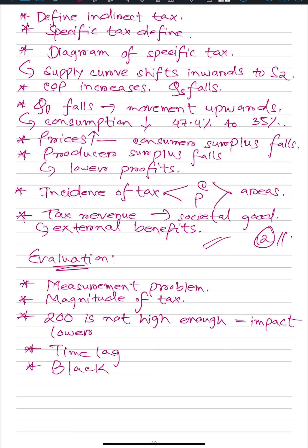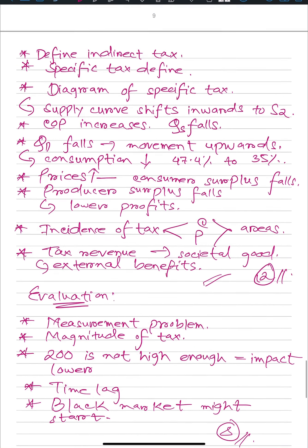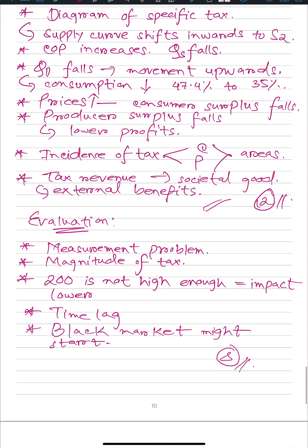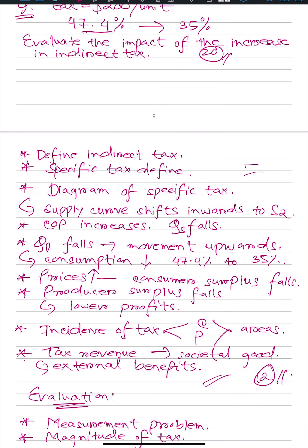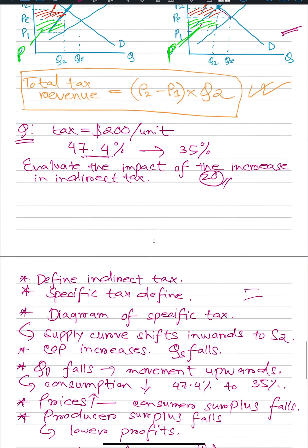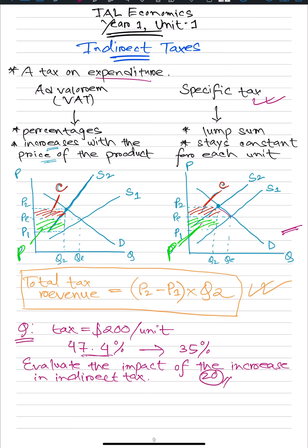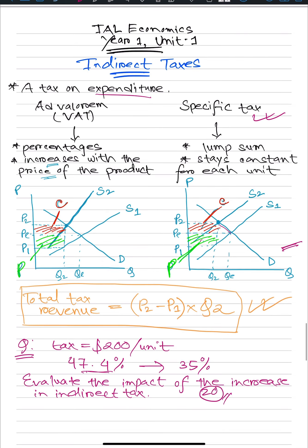The last evaluation point is that there might be a black market. I'm giving a lot of evaluations — you just have to write three or four. If people can't buy mobile data legally, they might find a way to buy it illegally, and then the entire argument of increasing the tax falls. These will get you eight marks. The evaluation points are literally always the same — if you increase tax, all of these are going to happen no matter what. Just try to remember the diagrams and that's basically it. Thank you for watching and we'll see you next time.